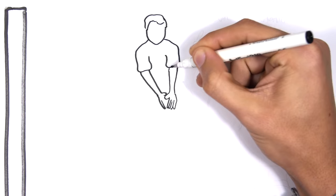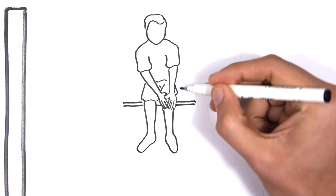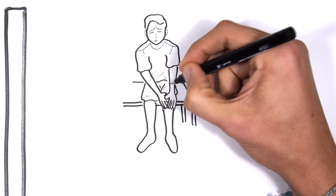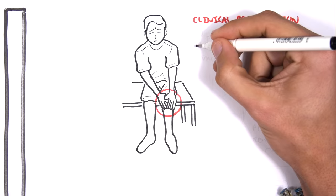Hello, in this video we're going to talk about septic arthritis — this is an introduction and overview. With any monoarthritic presentation, it is important to rule out septic arthritis as this can cause irreversible damage to the joint.